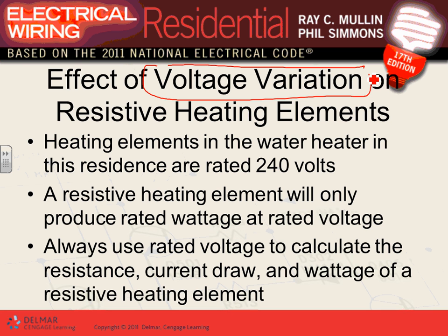Voltage variation directly affects power output. If your water heater is rated for 5 kW at 240V, the relationship is P = V²/R. Power is proportional to voltage squared, so voltage variation has a significant impact on the heating output.